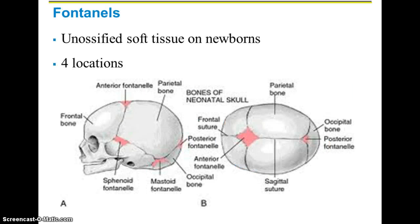Unossified tissue is basically anything that hasn't formed bone yet. This is why infants are born with more bones than adults actually have, because once these bones grow together they start forming fewer bones. The reason babies are born with soft spots called fontanelles is because they have to squeeze through the pelvis of the mother and go through the cervical canal, so these fontanelles allow the skull to squish a little bit and make their way through without causing any damage.